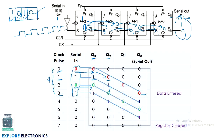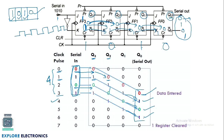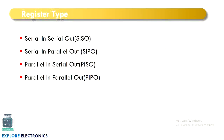After four clock cycles, the flip-flops hold 0101 at outputs Q3, Q2, Q1, Q0. To read the data back out, we observe zero, one, zero, one serially from the last flip-flop over the next four clock cycles. Since the output comes out reversed, we read it in reverse direction to recover the original data. After all data is read out, all registers return to zero and fresh data can be loaded.